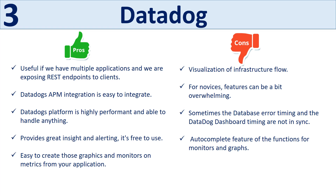Pros of Datadog include being useful when managing multiple applications and exposing REST endpoints to clients. Its APM integration is easy, the platform is highly performant, provides great insight and alerting, is free to use, and makes it easy to create graphics and monitors on metrics from your application. Cons include visualization of infrastructure flow that can be overwhelming for novices, and sometimes the database error timing and Datadog dashboard timing are not in sync, plus the autocomplete feature for monitors and graphs needs improvement.